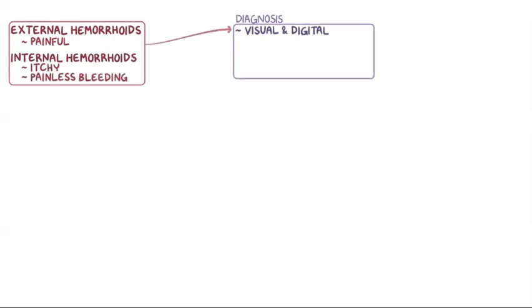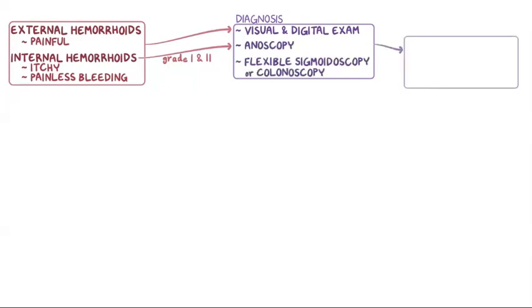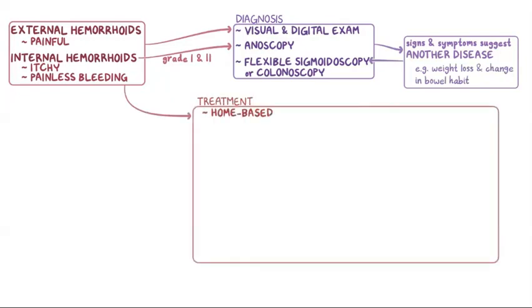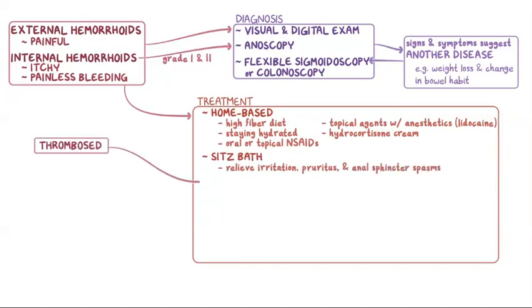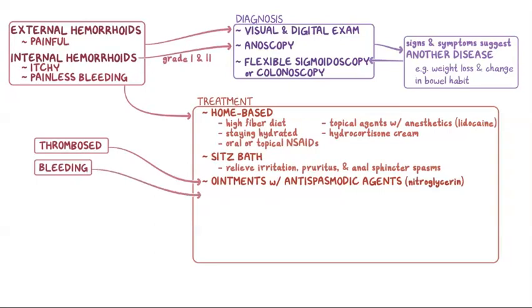As a quick recap: external hemorrhoids are usually painful, whereas internal hemorrhoids typically cause itching and painless bleeding. Visual and digital examination may be enough to diagnose external or internal prolapsed hemorrhoids, while internal hemorrhoids grades 1 and 2 may require anoscopy. Further testing with flexible sigmoidoscopy or colonoscopy is recommended if signs and symptoms suggest another disease, such as weight loss and change in bowel habit. The initial treatment approach is home-based, with a high-fiber diet and staying hydrated, as well as oral or topical NSAIDs, topical agents containing anesthetics like lidocaine, or a hydrocortisone cream. Individuals may also take sitz baths to help relieve irritation, pruritus, and anal sphincter spasms. Individuals with thrombosed hemorrhoids may also apply ointments containing antispasmodic agents like nitroglycerin, and individuals with bleeding may get venoactive agents.